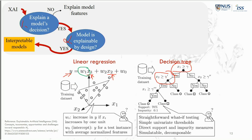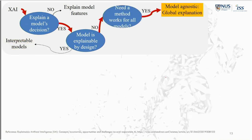But what about complex models like deep learning that are very difficult to explain? The next question is: do you need a method that applies to all models — model-agnostic — or a method specific to your particular model? For model-agnostic methods, we can further choose between global explanation and local explanation.